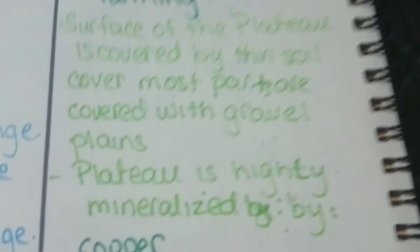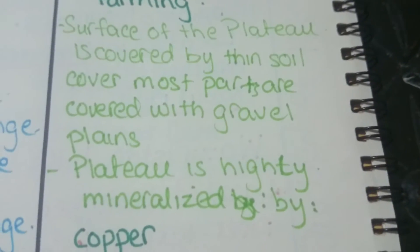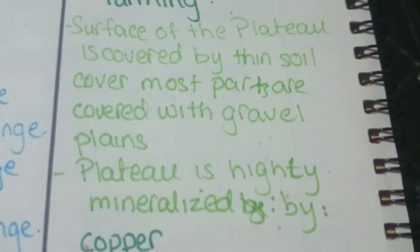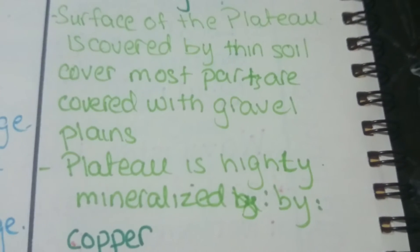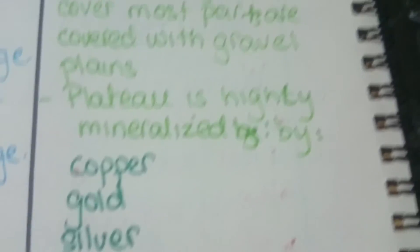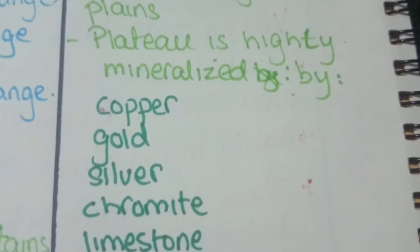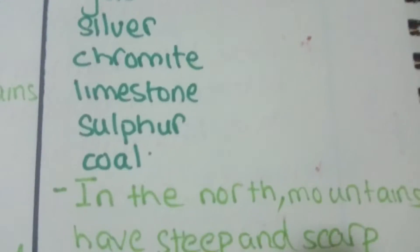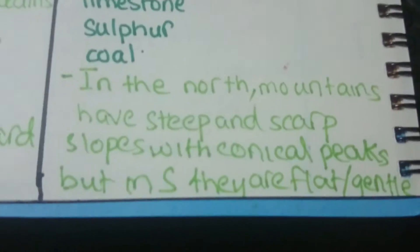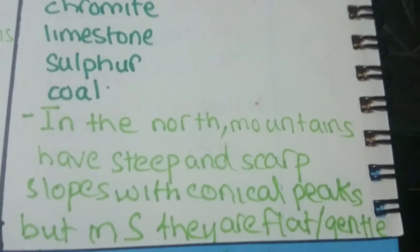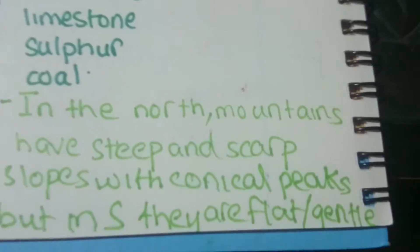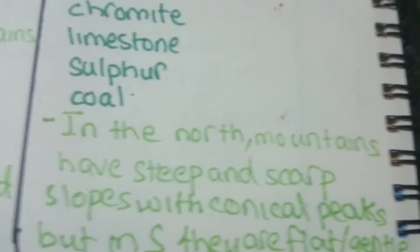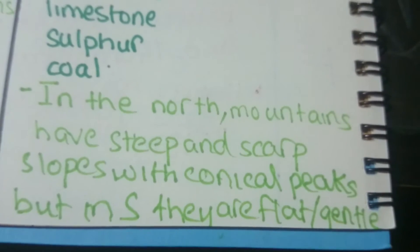The surface of the plateau is covered by thin soil, and most parts are covered by gravel plains. The plateau is highly mineralized with copper, gold, silver, chromite, limestone, sulfur, and coal. In the north, mountains have steep scarped slopes with conical peaks.